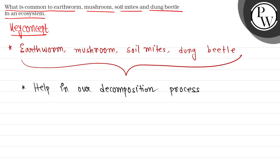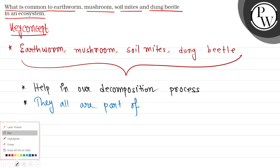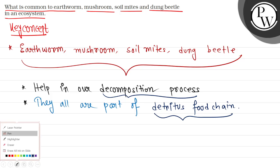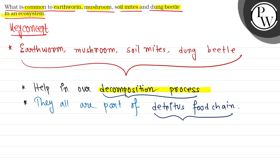They are all part of the food chain. The common thing in the ecosystem is that they are part of the decomposition process and detritus are present in the food chain. So I hope you understand the question very well. Best of luck.